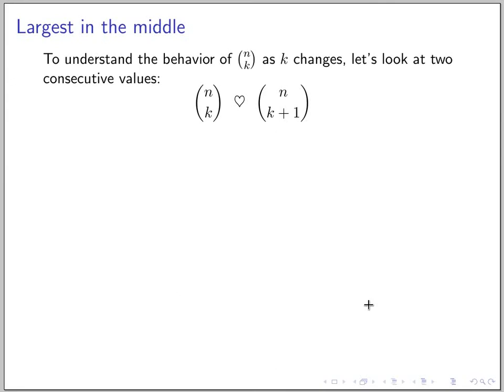So to understand the behavior of the binomial coefficient as k changes, let's look at the two consecutive values. So look at n choose k and n choose k plus 1. So in the plot, it will be like this point n choose k and this point will be n choose k plus 1, next to each other. So let's compare the value. Let's expand each of the terms.